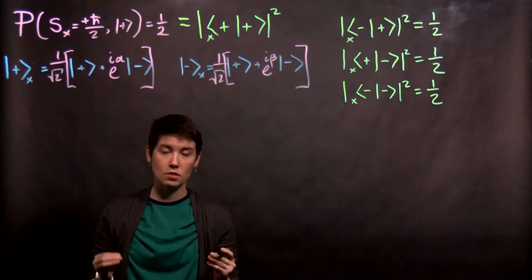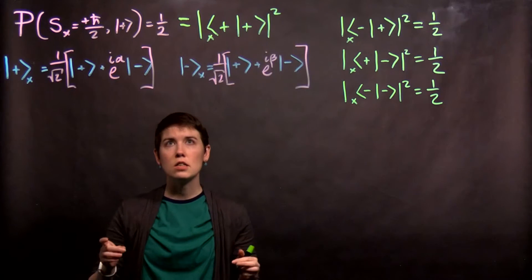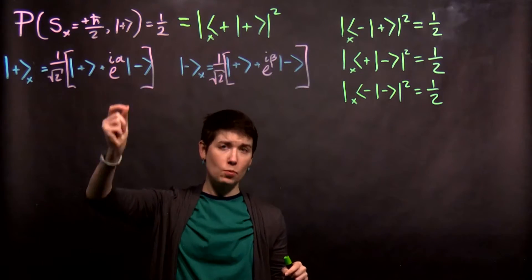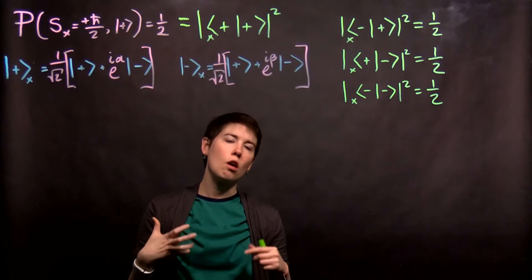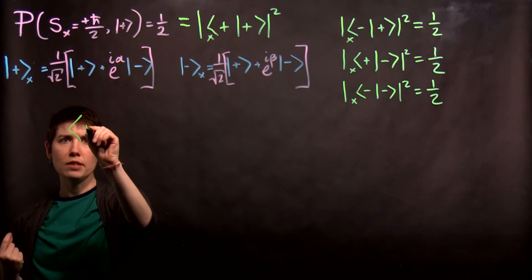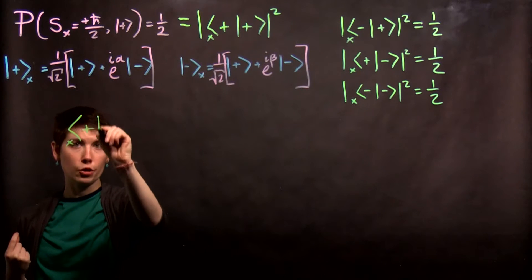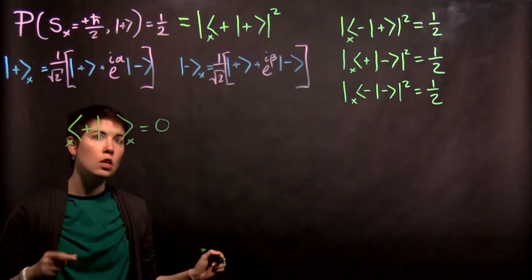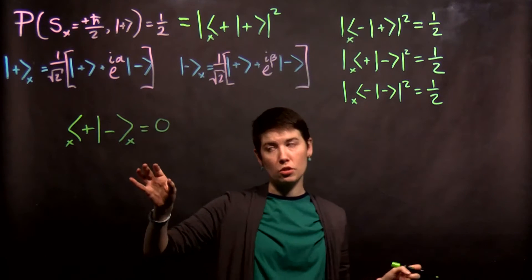We have to use one more piece of information, and that is that if we think about these two states, spin up and spin down in the x direction, they are orthogonal states. What that means is that if we take that inner product between them, that's going to equal 0. This is the final piece of information we need here.